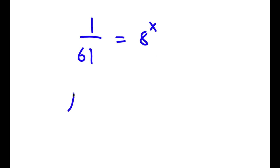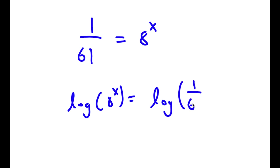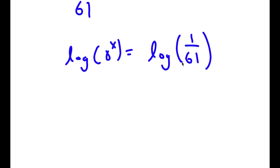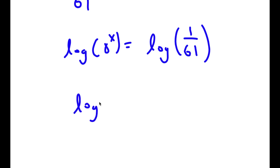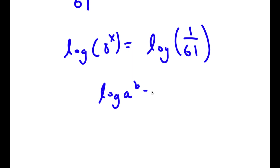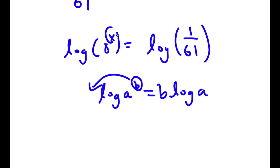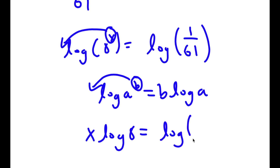To solve this, I'm going to take the log on both sides. So now I have log 8 to the power of x is equal to log 1 over 61. If I have something in the form log a to the power of b, I can move b to the front — so this equals b times log a. So log 8 to the power of x becomes x times log 8 is equal to log of 1 over 61.